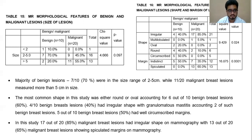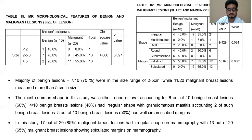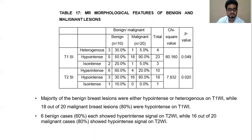Moving on to the MRI findings, the majority of the benign lesions were in the size range of 2 to 5 centimeters while 11 out of 20 malignant lesions were more than 5 centimeters in size. The most common shape was round or oval, accounting for 6 out of 10 benign breast lesions, while 4 out of 10 had an irregular shape, with granulomatous mastitis accounting for 2 of such cases. 17 out of 20 malignant breast lesions had an irregular shape with 13 showing spiculations. The majority of breast lesions that were hypo-intense or heterogeneous on T1 proved to be benign, while 18 out of 20 malignant breast lesions were hypo-intense on T1. 6 benign cases showed hyper-intense signal on T2 while 16 out of 20 malignant cases showed hypo-intense signal on T2.